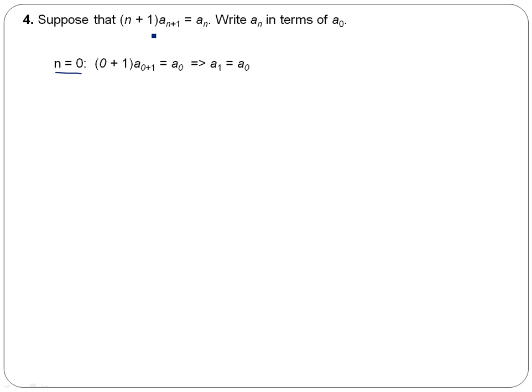And we get zero plus 1, a to the zero plus 1 is equal to a_zero. That gives you 1, a_1 is equal to a_zero. So, we know the first term is equal to the zero term.